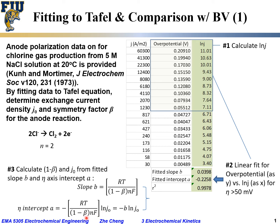And for the intercept, the eta intercept A, if you look at this relationship, you will find this term within the bracket is just the slope, slope B. So we can simplify this intercept A as minus B times natural log of exchange current density.